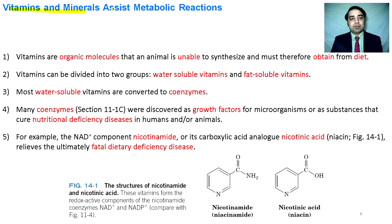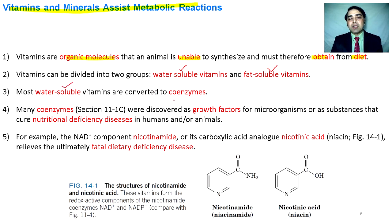Vitamins and minerals assist our metabolic reactions. Vitamins are organic molecules that our body is unable to make; that's why we obtain vitamins from the diet. There are two classes of vitamins: water-soluble vitamins and fat-soluble vitamins. Most water-soluble vitamins are in the form of coenzymes. Initially, coenzymes were discovered as growth factors and were proven to cure nutritional deficiency diseases.